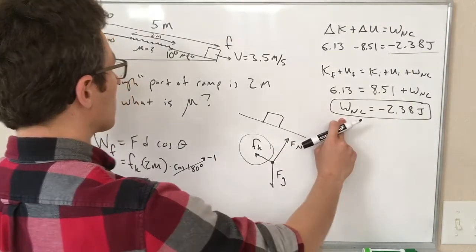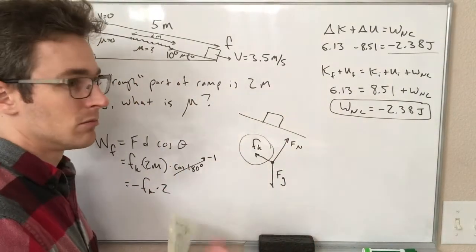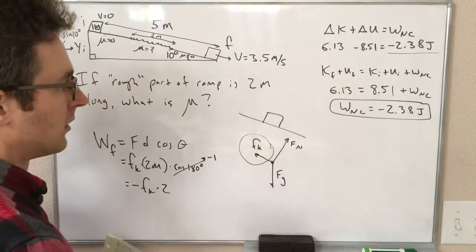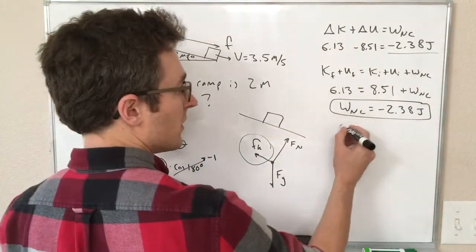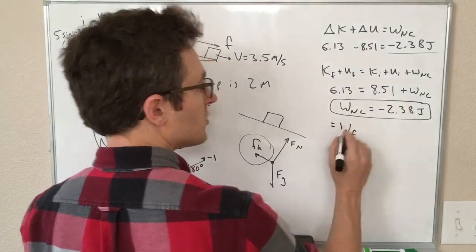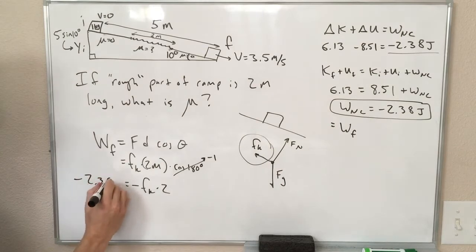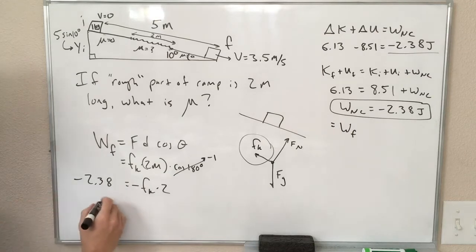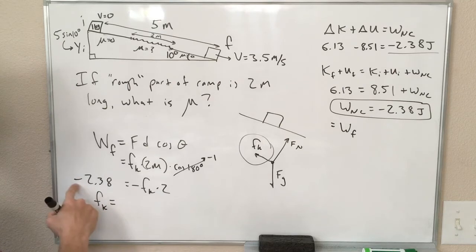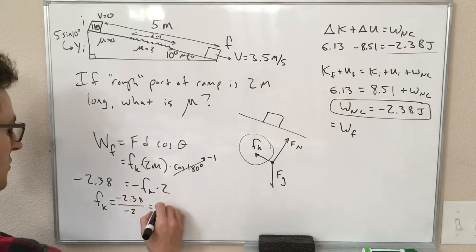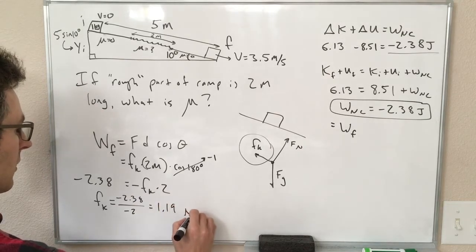And our non-conservative work, since the friction is the only piece that is doing this non-conservative work, there's not some other air resistance or something taking energy away, we know that this is equal to the work done by friction. So that means we can plug in minus 2.38 joules over here in our work equation, and then dividing both sides by minus 2, we get that our kinetic friction is minus 2.38 over minus 2, which equals 1.19 newtons.